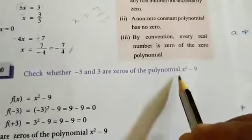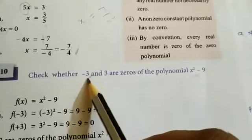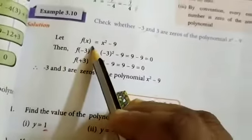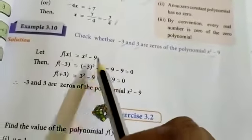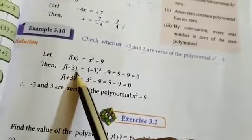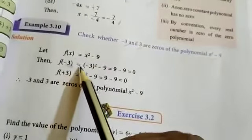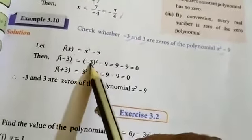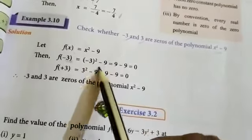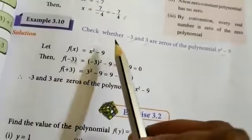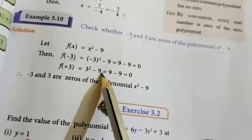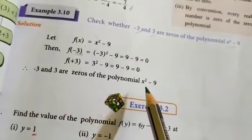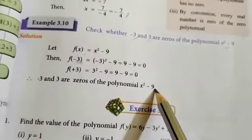Example 3.10: Check whether minus 3 and 3 are zeros of the polynomial x squared minus 9. Substituting x equal to minus 3: f of minus 3 equal to minus 3 whole squared minus 9, so 9 minus 9 equal to 0. Next, f of 3 equal to 3 squared minus 9, that is 9 minus 9 equal to 0. Therefore, minus 3 and 3 are zeros of the polynomial x squared minus 9.